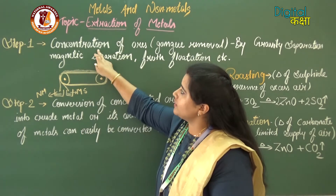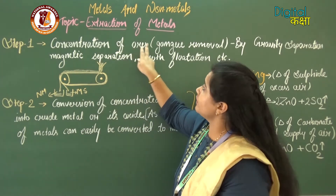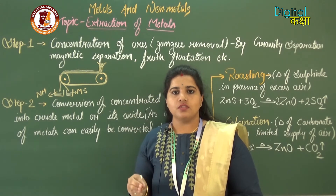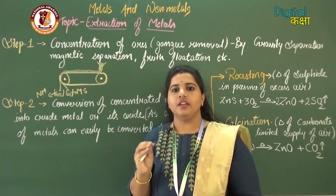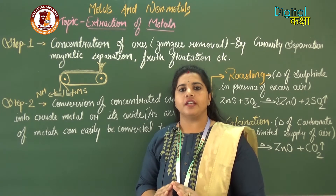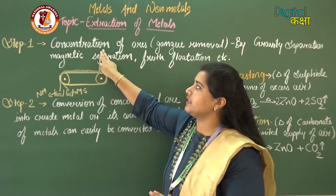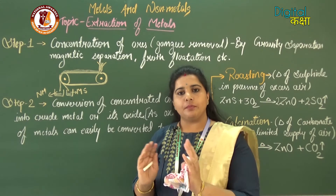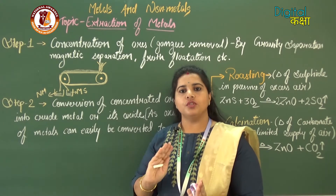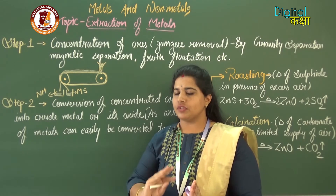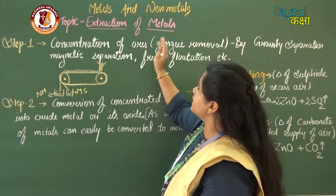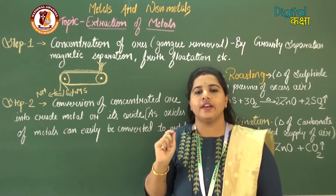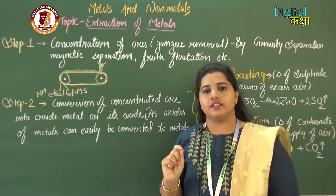The first step is concentration of ores — gang removal. Gang means the impurities like sand and stones, or impurities in solid form that can be easily removed. This method is called concentration of ore: when the ore is taken out from the earth's crust, that part is made free from soil, sand, dust, and easily removable solid particles.